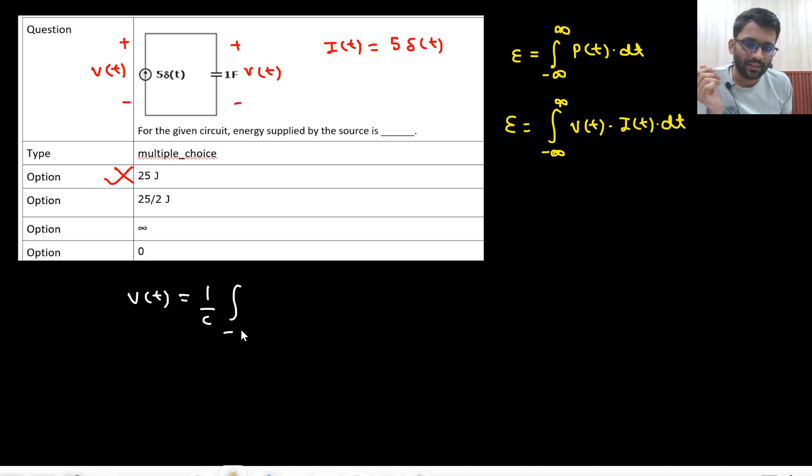1 by C, minus infinity to T, I dot dT. So what you will get, 5 by C, 5 will come outside, integration from minus infinity to T, delta T dT, what that would be, ut. Basically an impulse will come at T equals to 0 and your capacitor will instantaneously charge by 5 by C voltage. Your capacitor will instantaneously develop 5 by C voltage.